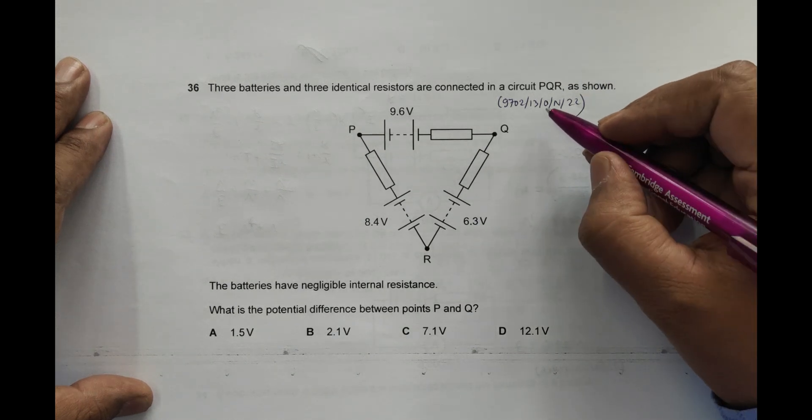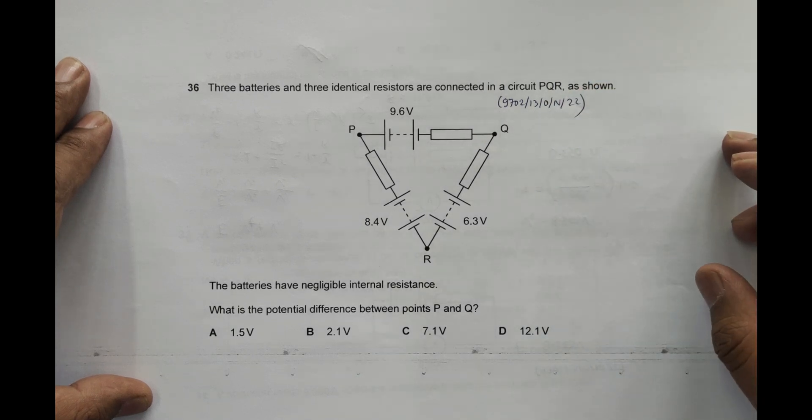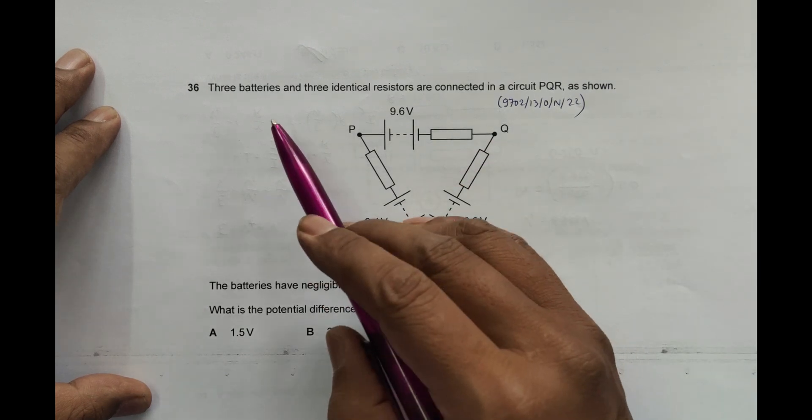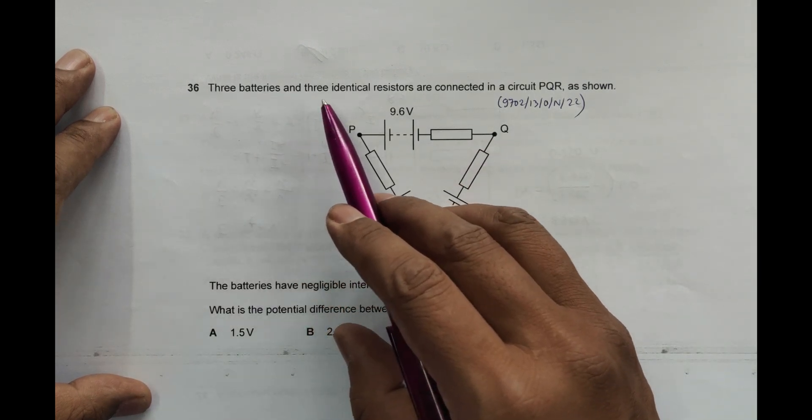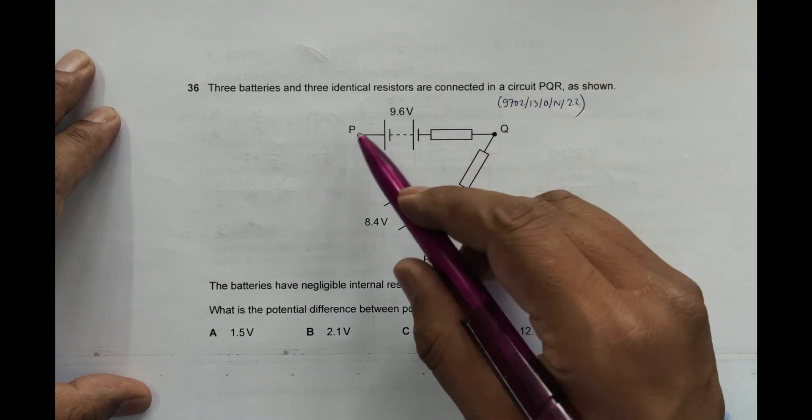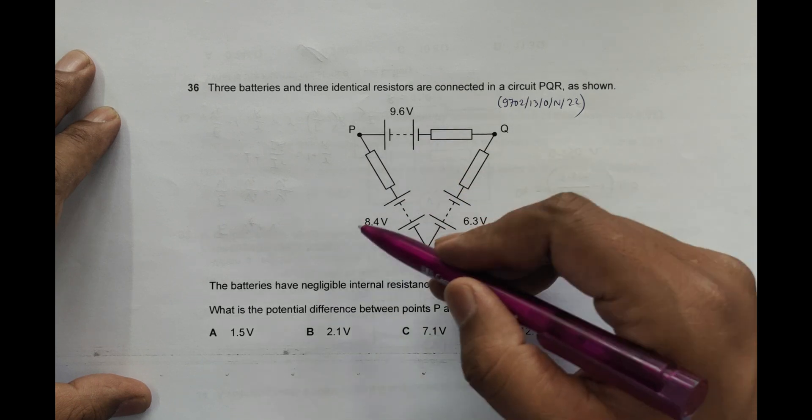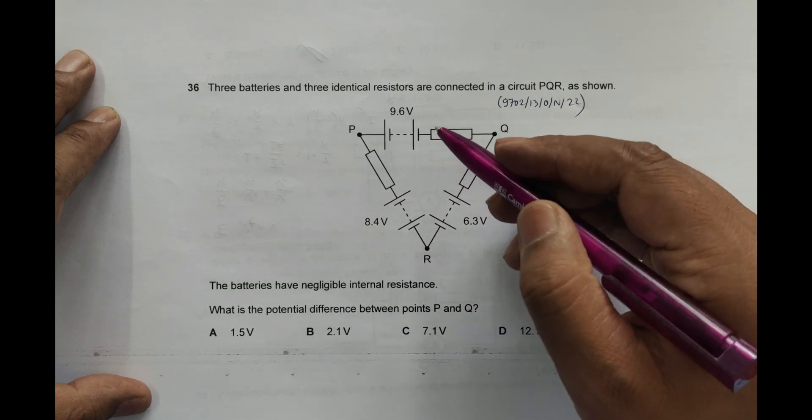Hello folks, this is 2022 October November paper 1 3, question number 36. The question is concerned with the chapter current density. As you can see here, it says three batteries and three identical resistors are connected in a circuit PQR. So we have got the three batteries here with different EMFs and three resistors.